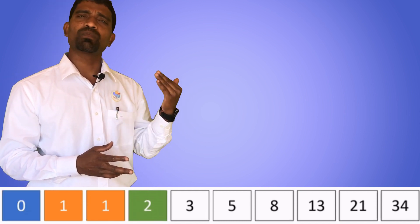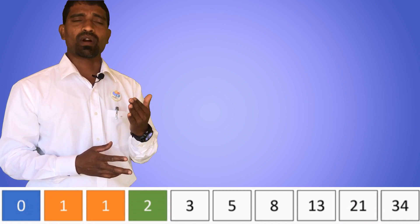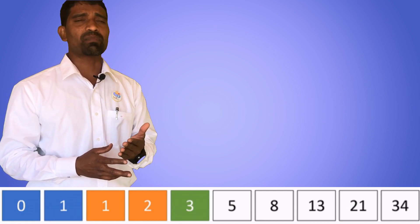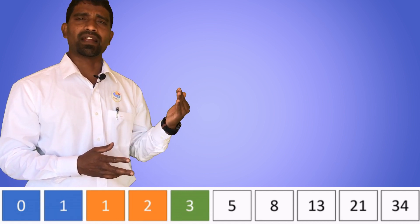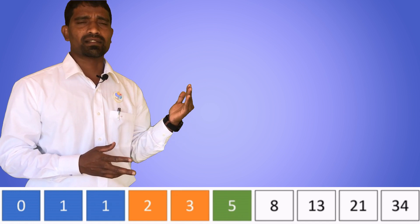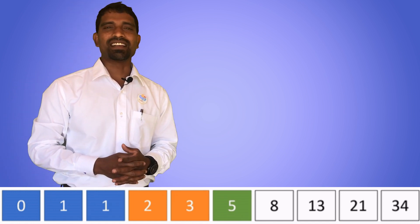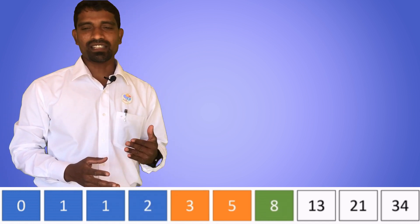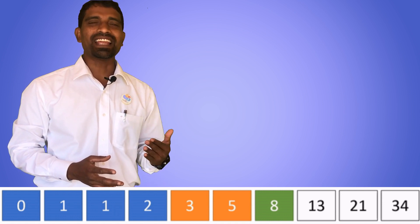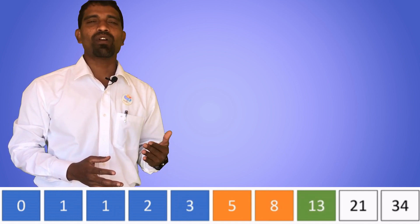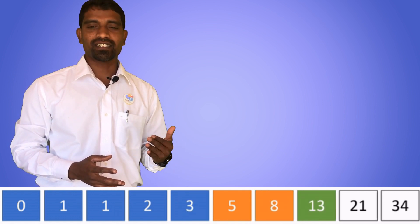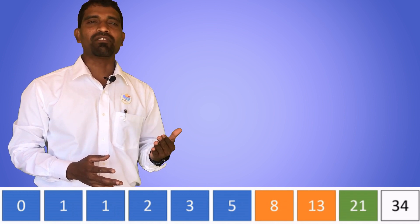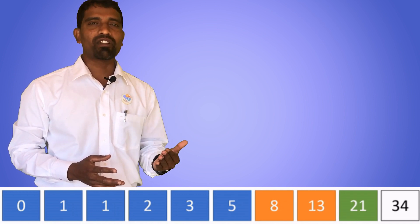What is two plus one? It is three. What is three plus two? It is five. What is five plus three? It is eight. The sequence goes on as one, one, two, three, five, eight, thirteen, twenty-one, thirty-four, fifty-five, and so on and so forth.